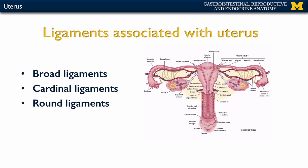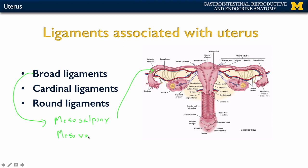Now, ligaments associated with the uterus. Let's review the three parts of the broad ligament. You have the mesosalpinx, which is associated with the uterine tube. You'll have the mesovarium, which is associated with the ovaries. And then you'll have the mesometrium — that's the bulk of the broad ligament, all of this yellowish shading right here around the uterus. It plays a very big role in anchoring and keeping the uterus associated with the lateral wall.